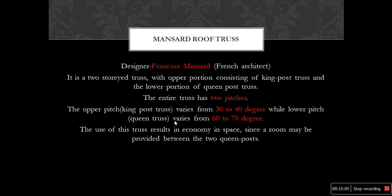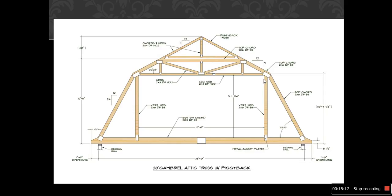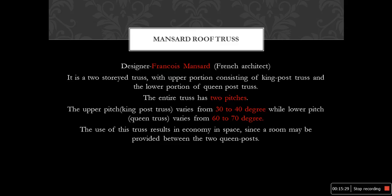The mansard truss was designed by François Mansard, and the roof truss is named in his honor. It is a two-story truss with the upper portion consisting of a king post and the lower portion of queen post. The upper king post pitch varies from 30 to 40 degrees and the queen post portion varies from 60 to 70 degrees. The use of this truss results in economy of space since only one room is provided between the two queen posts.